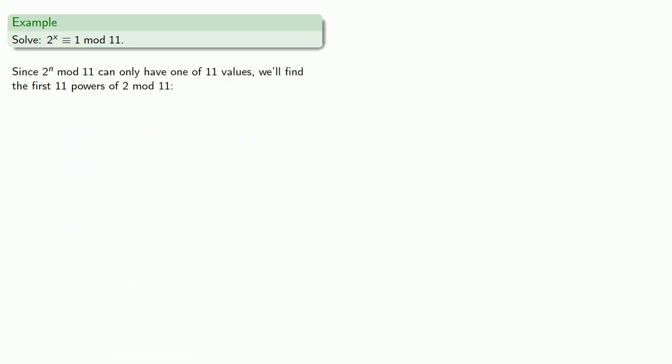Since 2 to the n mod 11 can only have one of 11 values, we'll find the first 11 powers of 2 mod 11. We'll find 2 to the first, 2 to the second, 2 to the third, and so on. The first couple of powers don't exceed n, so they are just the actual values. 2 to the fourth is 16, which we can reduce to 5 mod 11.